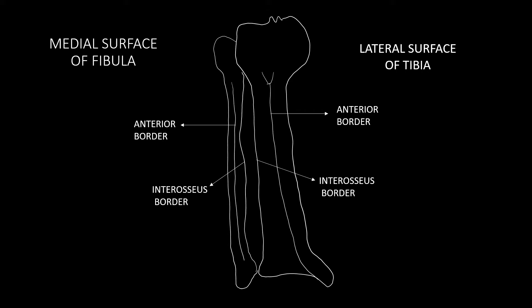These four muscles in the front originate from the leg bones — the tibia and the fibula. If you draw the tibia and fibula and look at them from anterior, you can see the tibial tuberosity from which extends the anterior border up to the anterior border of the medial malleolus. Between this anterior border and the interosseous border is the lateral surface of the tibia. Similarly, on the fibula, between the anterior border and the interosseous border is the medial surface of the fibula. These two surfaces form the boundaries of the anterior compartment, and all muscles in the anterior compartment are attached to these two surfaces.